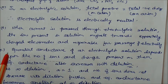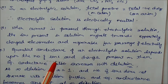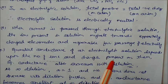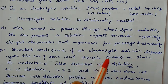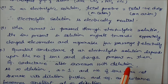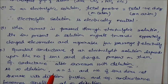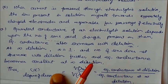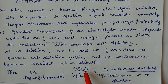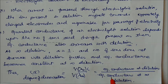When current is passed through an electrolytic solution, the ions migrate toward the oppositely charged electrodes and are responsible for the passage of electricity. The equivalent conductance of an electrolytic solution depends upon the number of ions and the charge present on them — it can be mono-, di-, tri-, or tetrapositive (e.g., Si⁴⁺). Equivalent conductance also increases with dilution. At infinite dilution, alpha equals 1 and maximum dissociation is reached, so equivalent conductance becomes constant. We can write: alpha = λv / λ∞, i.e., equivalent conductance at dilution divided by equivalent conductance at infinite dilution equals alpha.